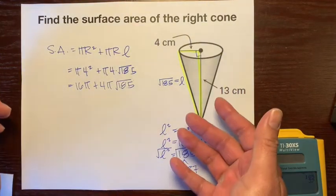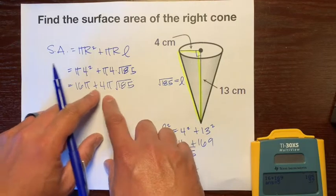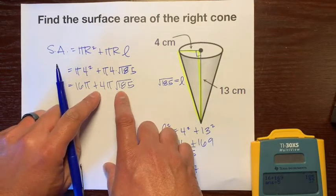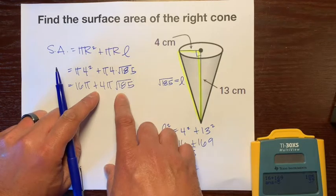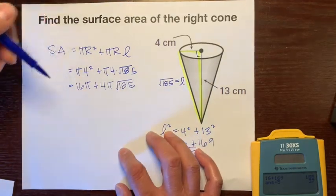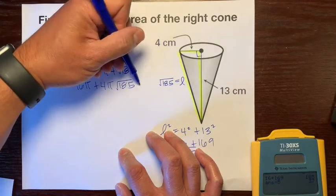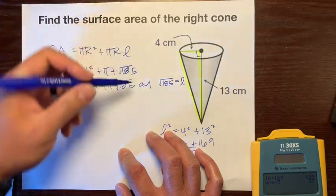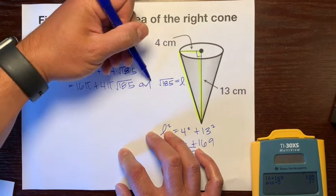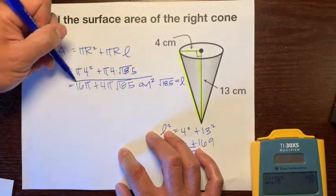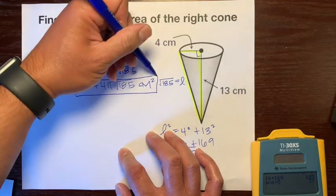Here's our answer. We can't combine these because these aren't like terms. Both of them have pi, but both of them don't have square root of 185. So we can stop right here and say this is our final answer. Let's put the units of centimeters, and surface area is always the number of squares, so centimeters squared. There is our final answer.